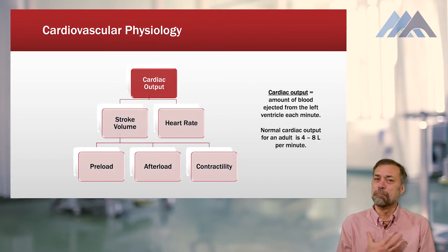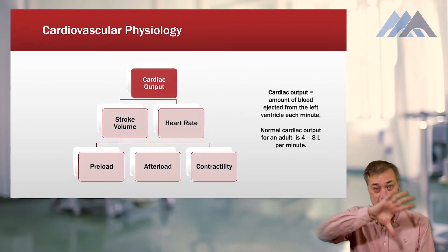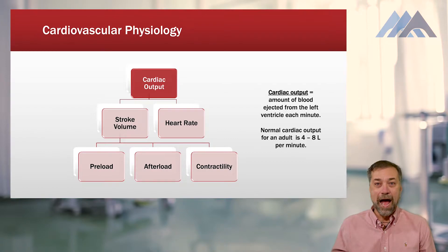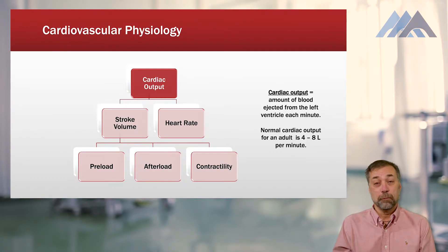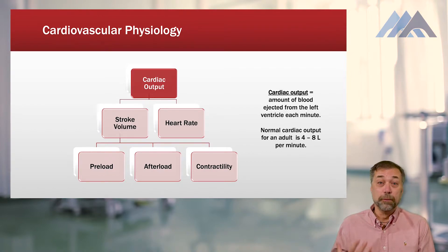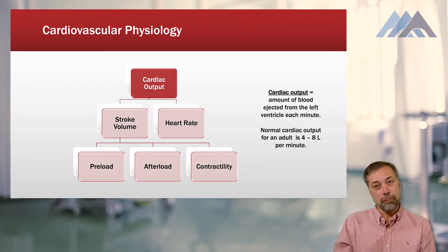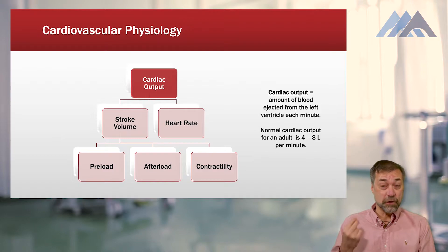I want to start with some basic cardiovascular physiology, just to lay out what we're going to be talking about throughout the entire cardiovascular lecture. Let's review how the cardiovascular system works. Remember, everything we do with the cardiovascular system is really meant to maintain a good cardiac output. A cardiac output is defined as the amount of blood ejected from the left ventricle each minute.